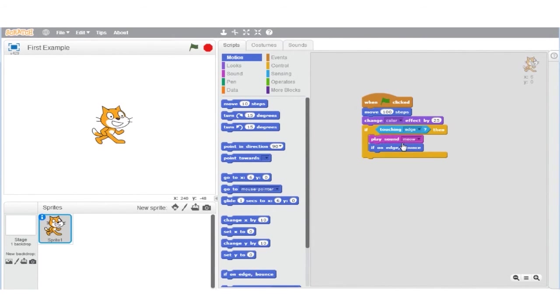My revised program is now ready. The cat will move and change color and if it is touching the edge, it will meow and bounce. In the next video, we'll discuss conditions in more detail.